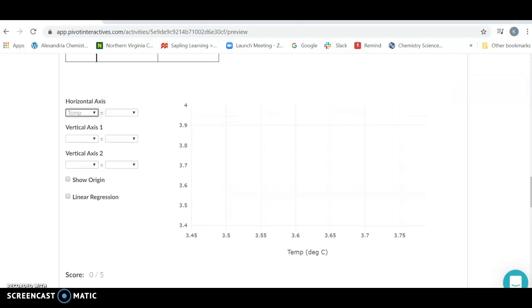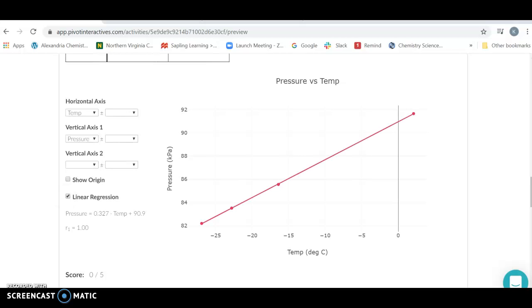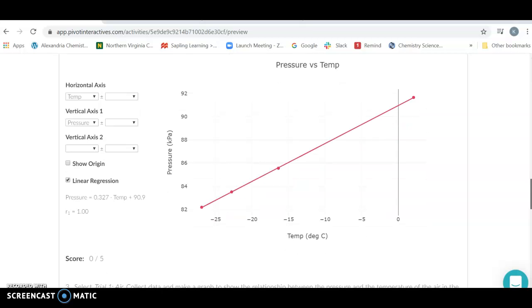This is going to allow us to graph it. So you're going to go to the horizontal axis and do your temperature. For your vertical axis, we're going to look at pressure. Remember here our pressure increases as our temperature increases. Now we can add a linear regression. A linear regression is what is going to give us the best straight line through these. When you've got your linear regression, you need to make sure that you record this equation. This equation here says the pressure is equal to our slope, 0.327 in this case for this experiment, multiplied by the temperature plus the intercept here, which is 90.9.